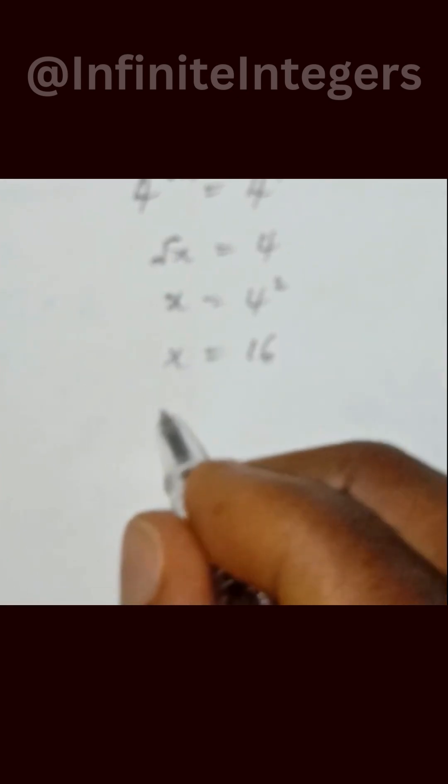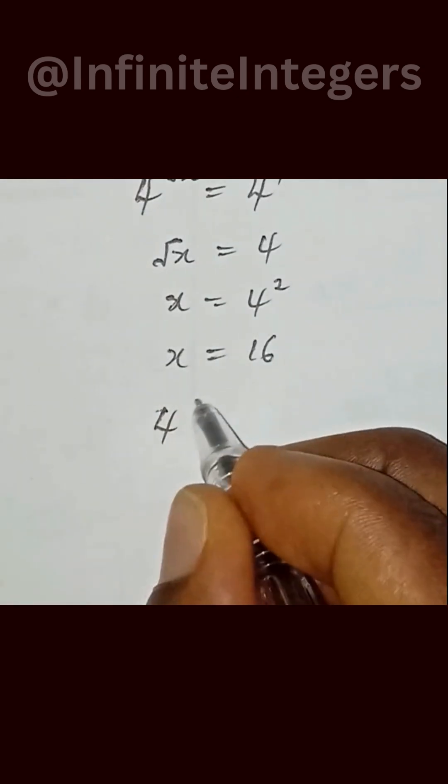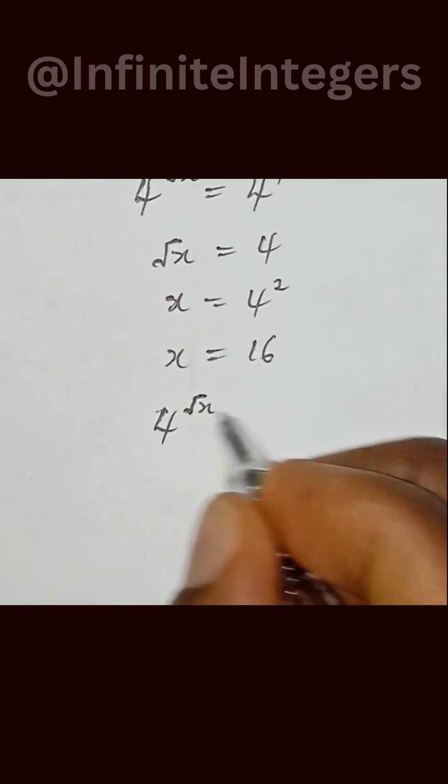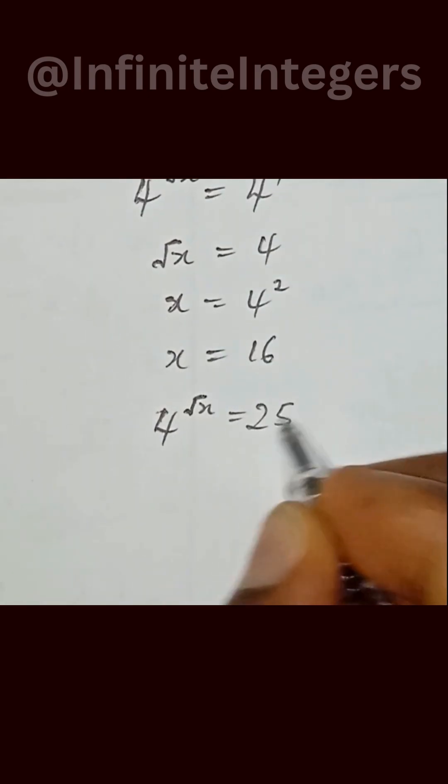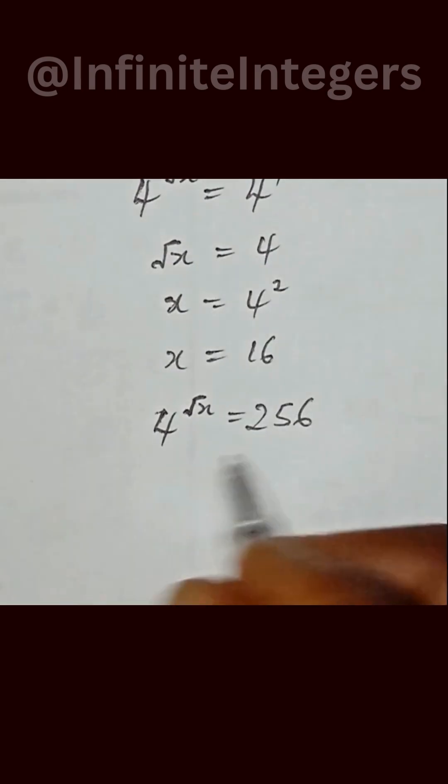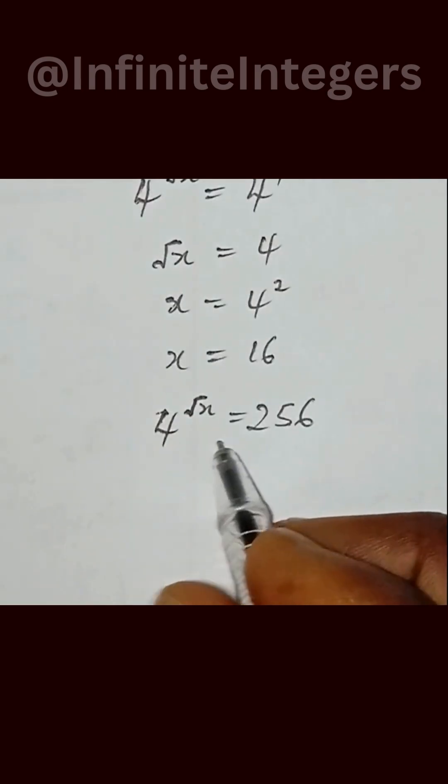So another approach is this. When you have 4 to the power of square root x equal to 256, you can reduce both left and right to base 2.